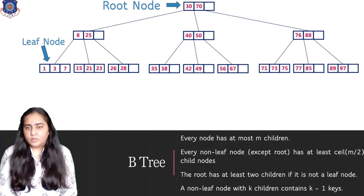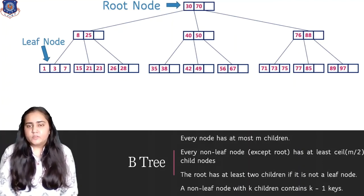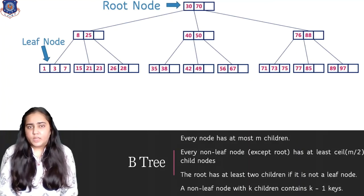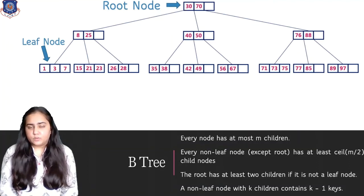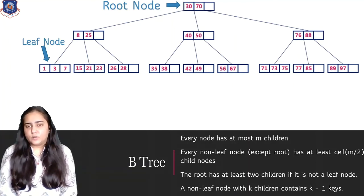And finally, a non-leaf node with k children contains k minus 1 keys. So if there are k children in a non-leaf node, it must have k minus 1 keys. You can see that from here. If you pick the node 8 and 25, which is there on the left-hand side of the root node, that node is having two keys and that's why it has three children. So the rule is satisfied, k children contains k minus 1 keys. This is what a B-tree looks like.